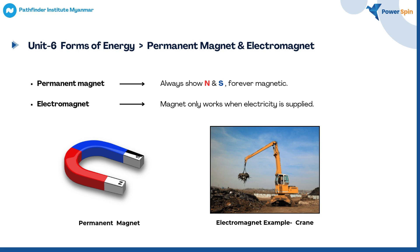I'll be presenting about the lessons under the subtitle called permanent magnet and electromagnet, which is in unit 6. As far as I've learned, there are two types of magnets which are permanent magnet and electromagnet. Permanent magnet always shows north and south and is magnetic forever. On the other hand, electromagnet is magnetized only when electricity is supplied.